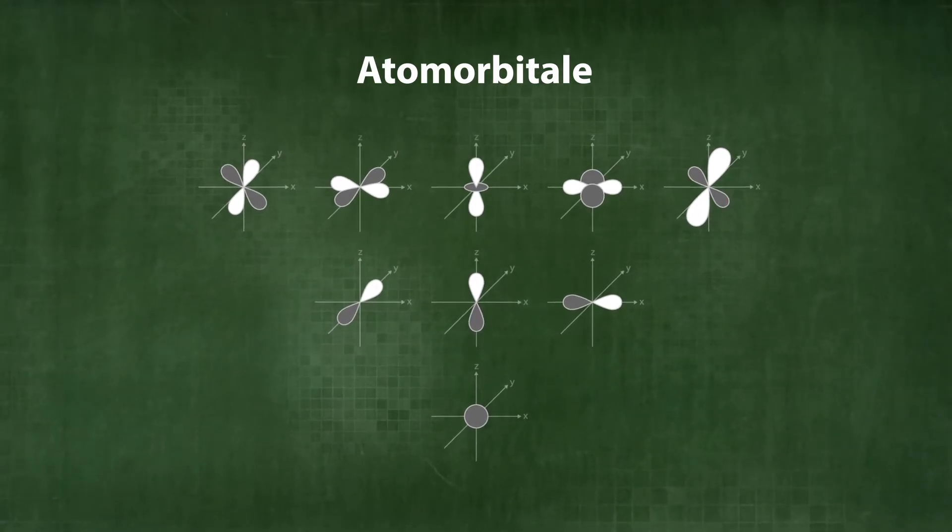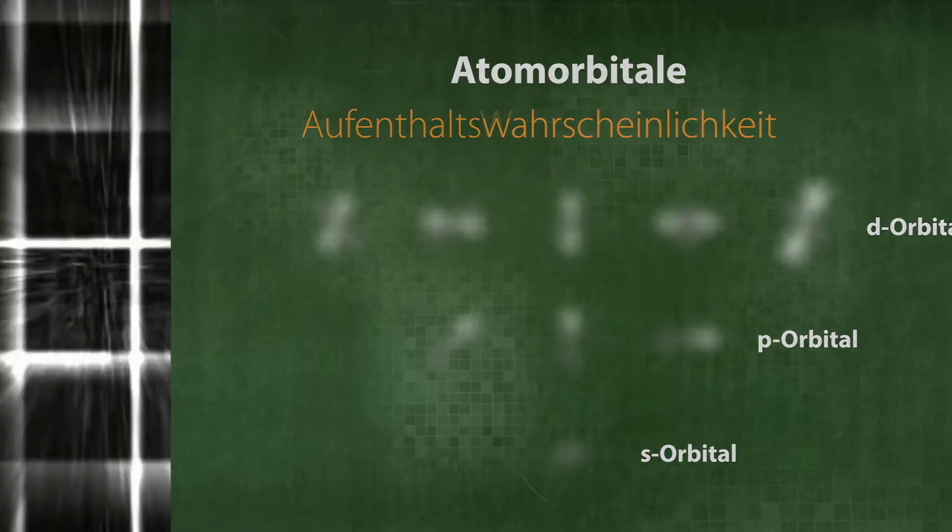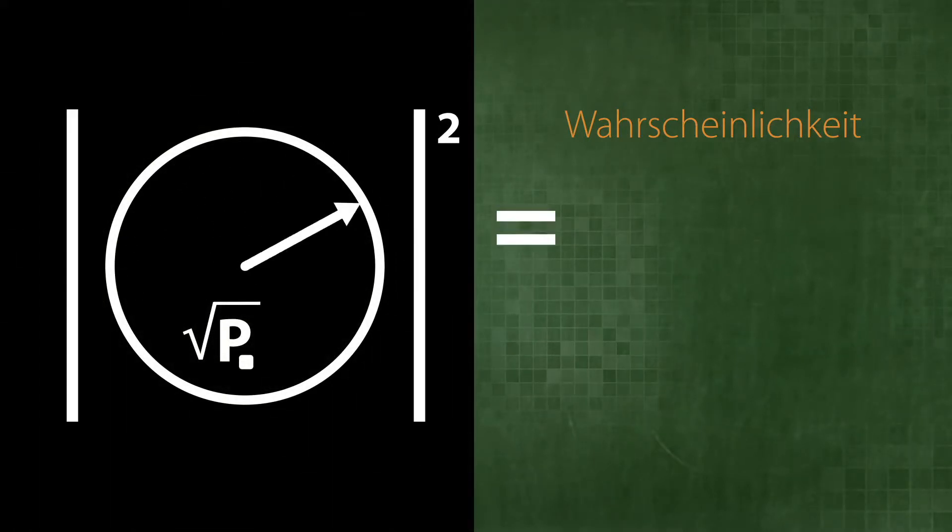Here we can see the locations of maximum probability for the s, p and d orbitals. Behind this probability there is the invisible vibration in the quantum dimension. This vibration has interference properties. It is visualized here in the form of a spinning wheel.